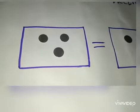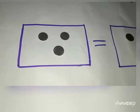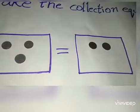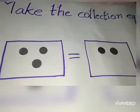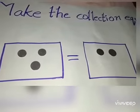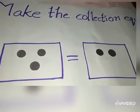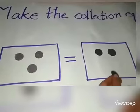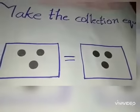As we can see in the first box there are three coins and in the second box there are two coins. We have to make them equal. So, can you tell me how many more coins do I need to make them equal? Yes, I need one more coin to make them equal.